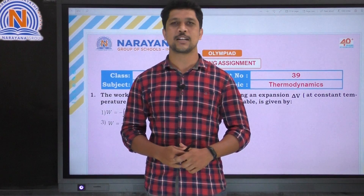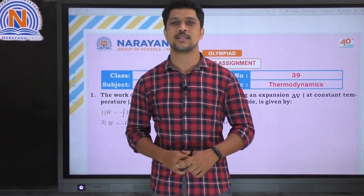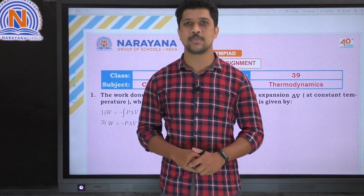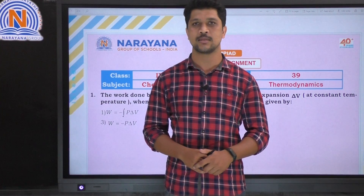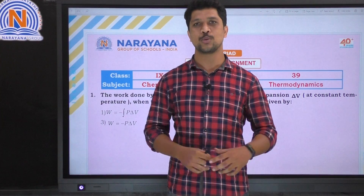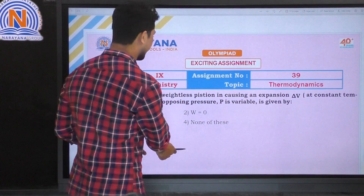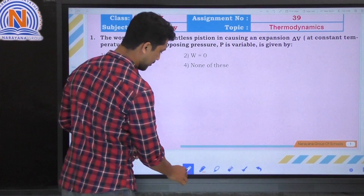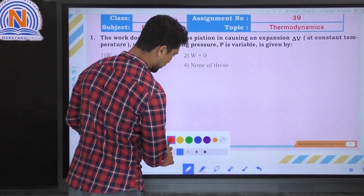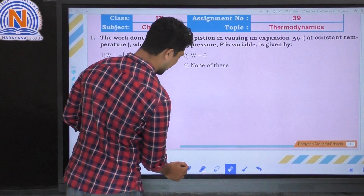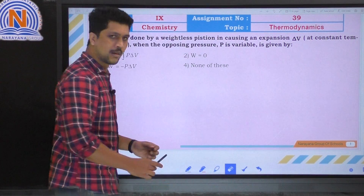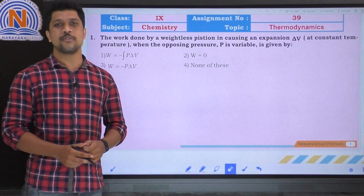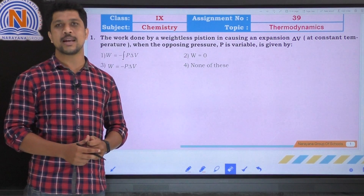Hello students, welcome back to Narana Digital Classes. Today we will be solving assignment number 39 on the topic thermodynamics. Let's move on to the assignment. The first question: the work done by a weightless piston in causing an expansion delta V at constant temperature when the opposing pressure P is variable is given by?